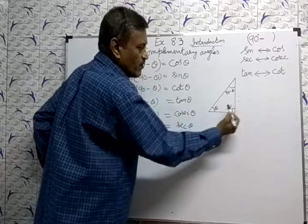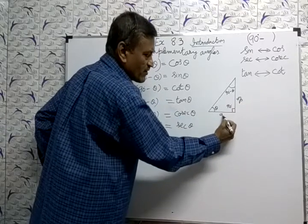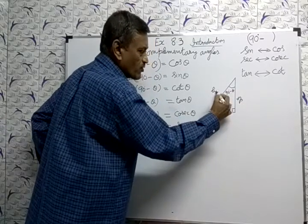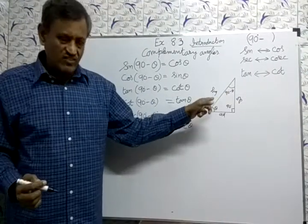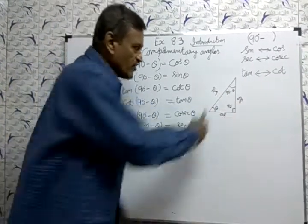Opposite side, adjacent side will change. Here 90 minus theta means adjacent, opposite, all will change. Only this is the difference there.